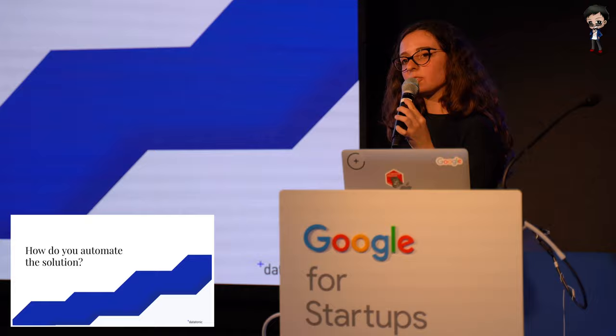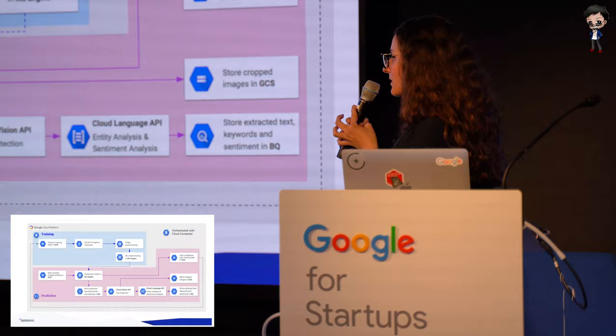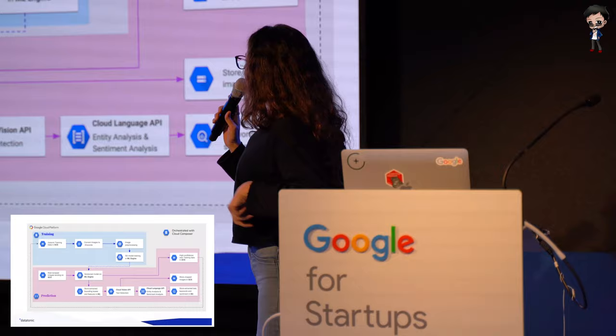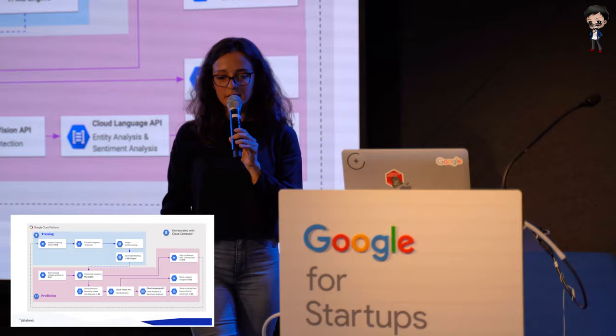Now that we know the machine learning model, we can look at how to actually serve this model for training and also for prediction. This is the architecture diagram of the solution on Google Cloud Platform. As you can see, there are two very separate pipelines. There is a training pipeline that is automated with Composer, running on a weekly schedule.